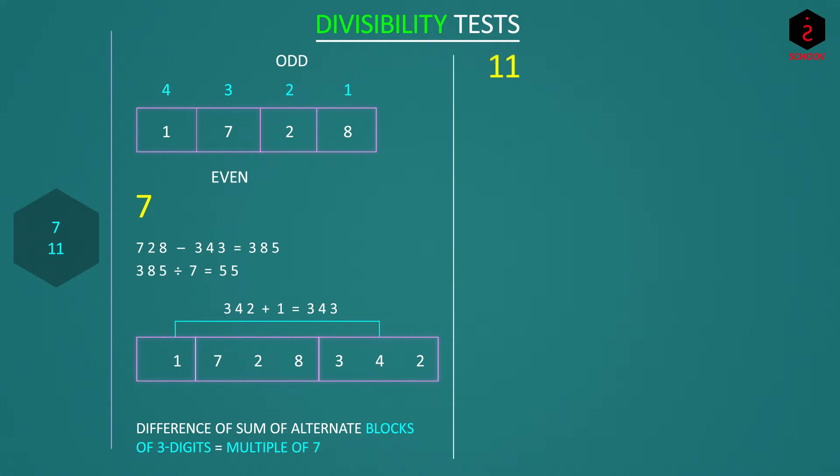For 11 we add numbers at odd and even places. In 1728 add 8 and 7, so 15. And 2 plus 1 is 3. The difference is 15 minus 3, which is 12. And since 12 is not divisible by 11, the number is also not divisible by 11. If we can make the difference 11 somehow, the number will be divisible by 11.